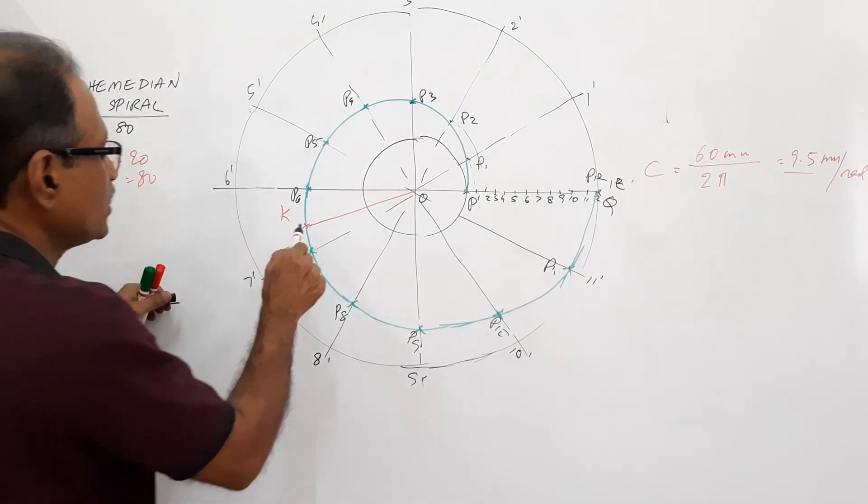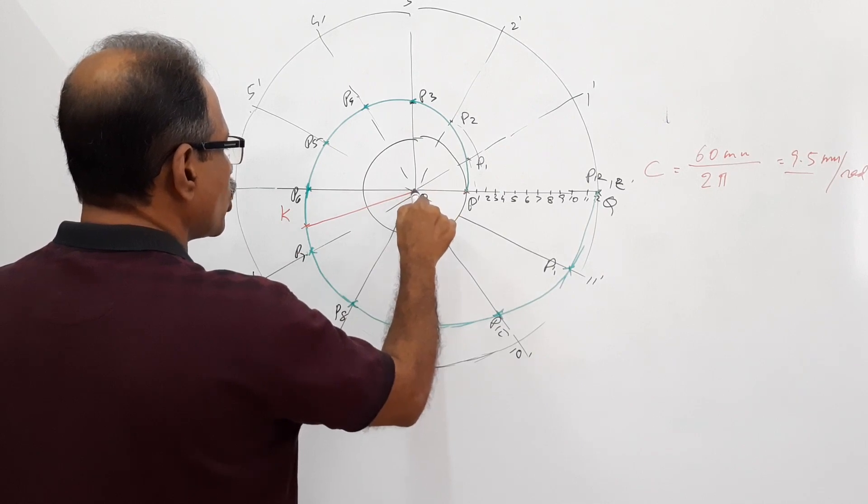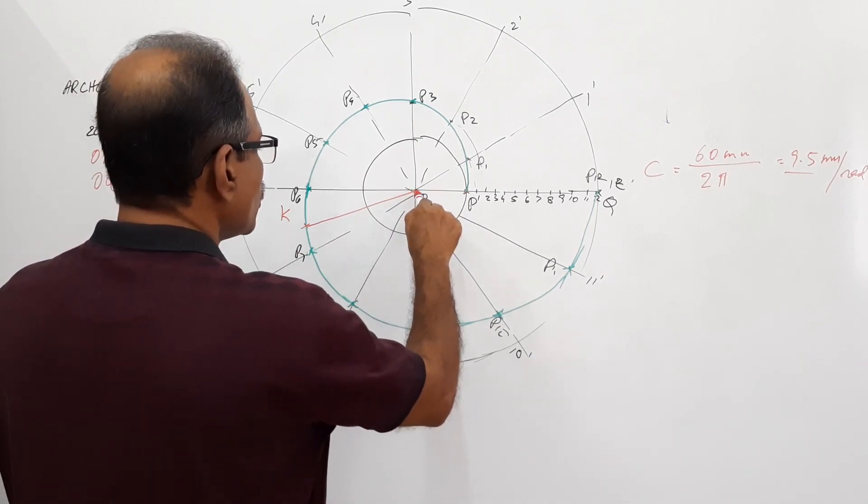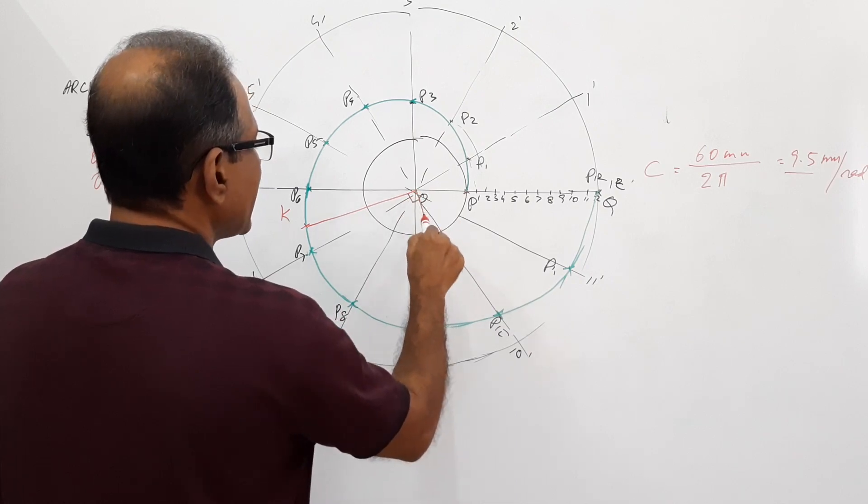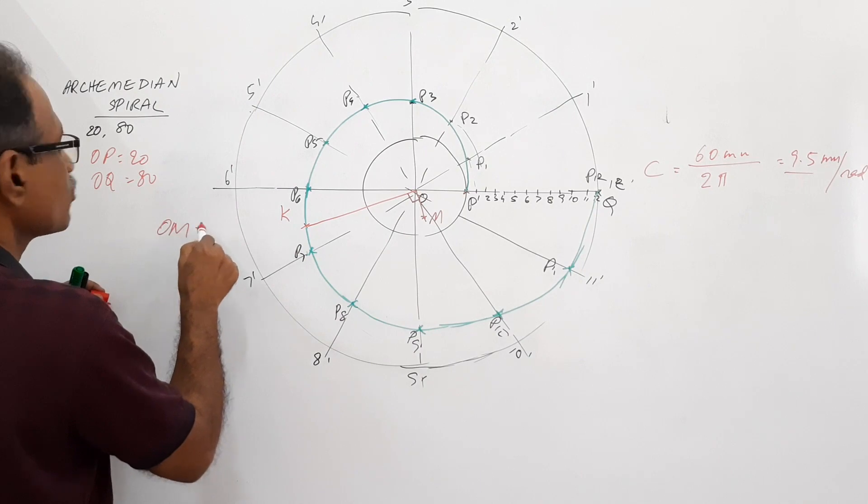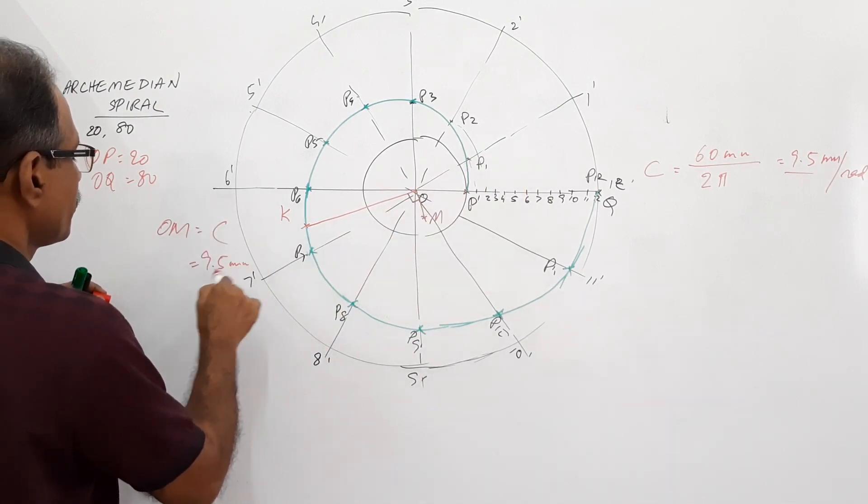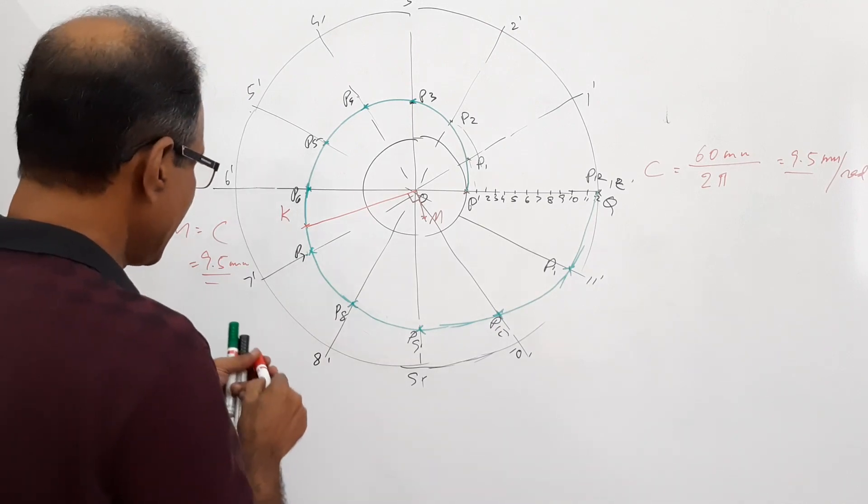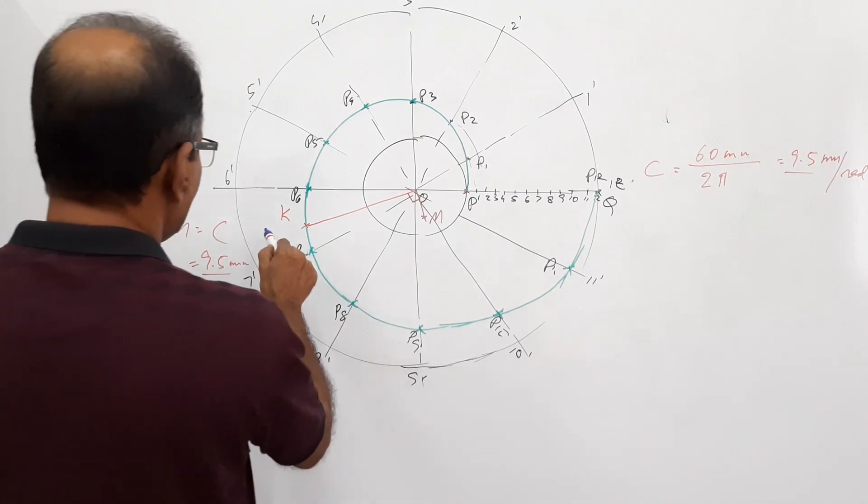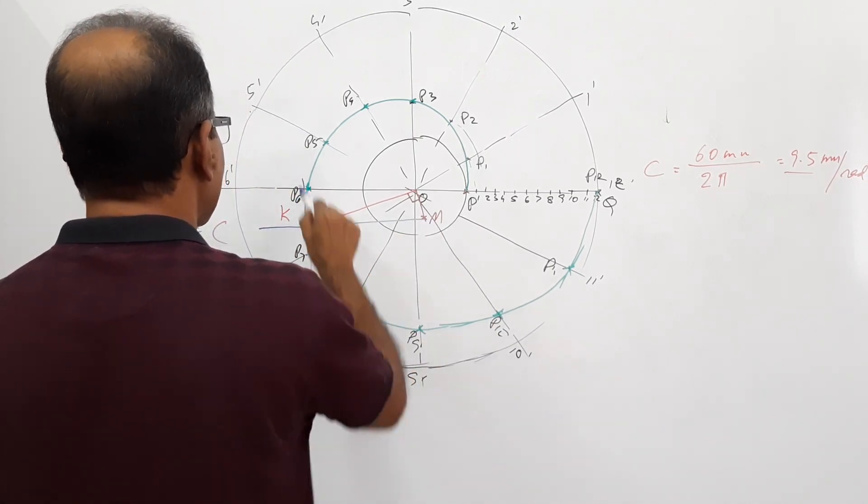Now, once you get Q, draw a perpendicular to OQ at O. And on that locate M such that OM equal to the constant C equals 9.5 mm. Then, once you get M, MQ is the normal at Q and a perpendicular to that is the tangent.